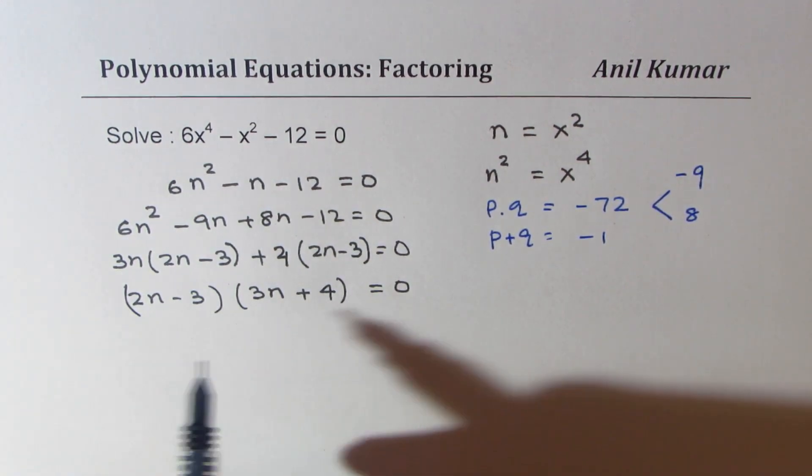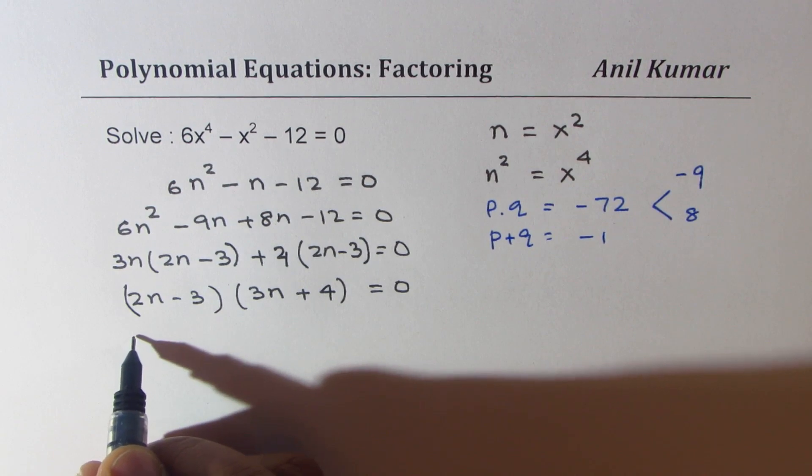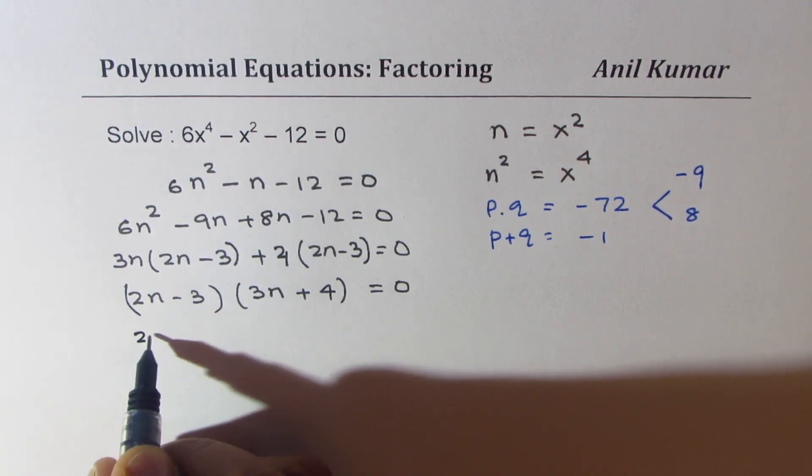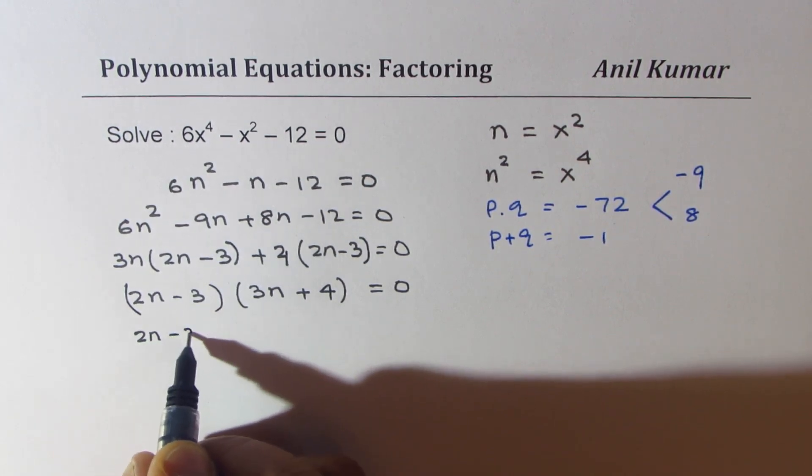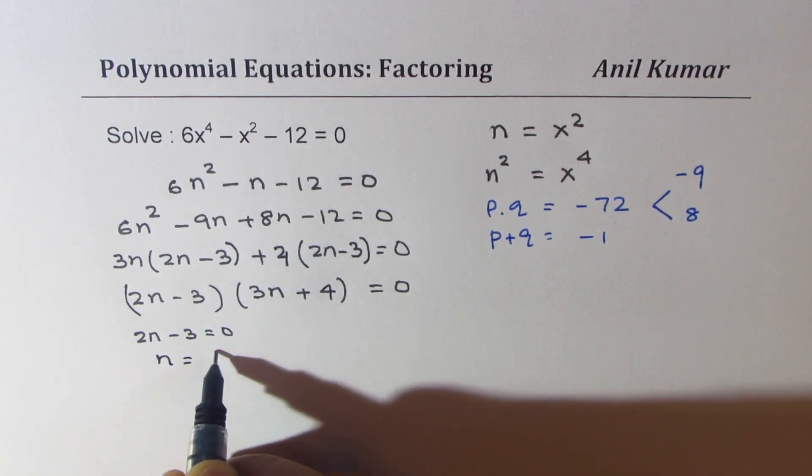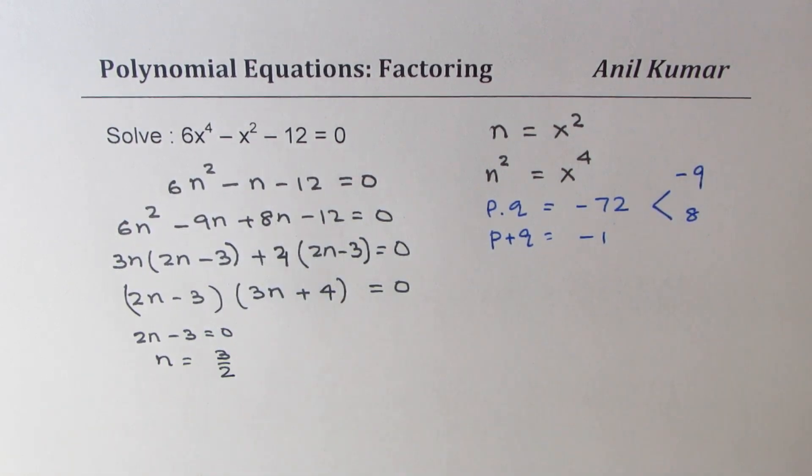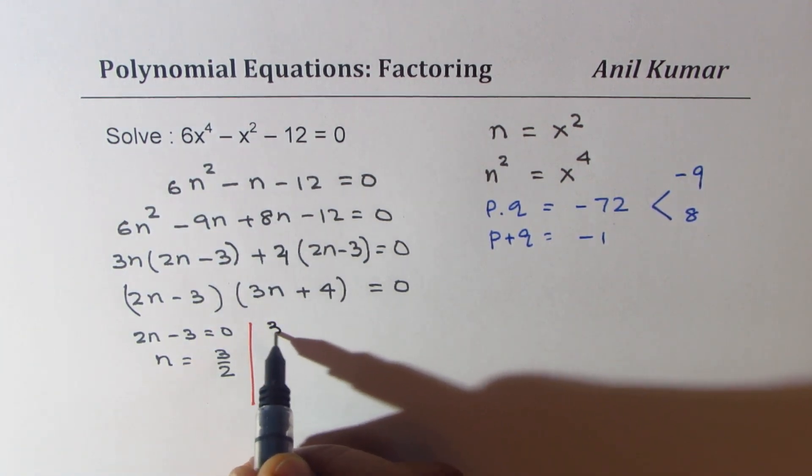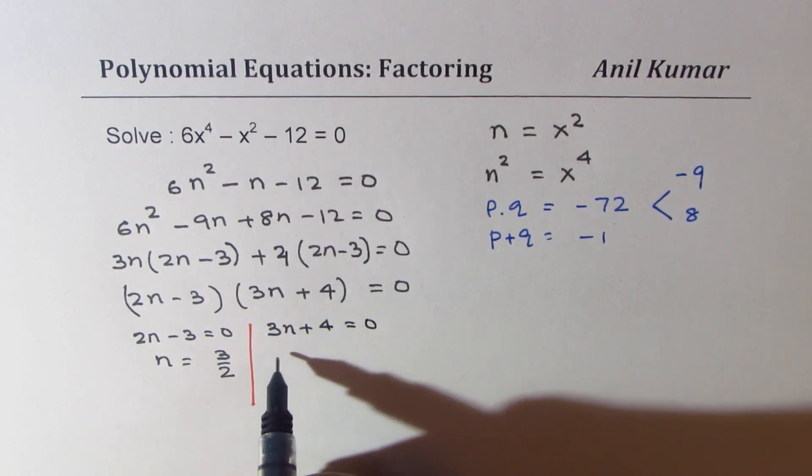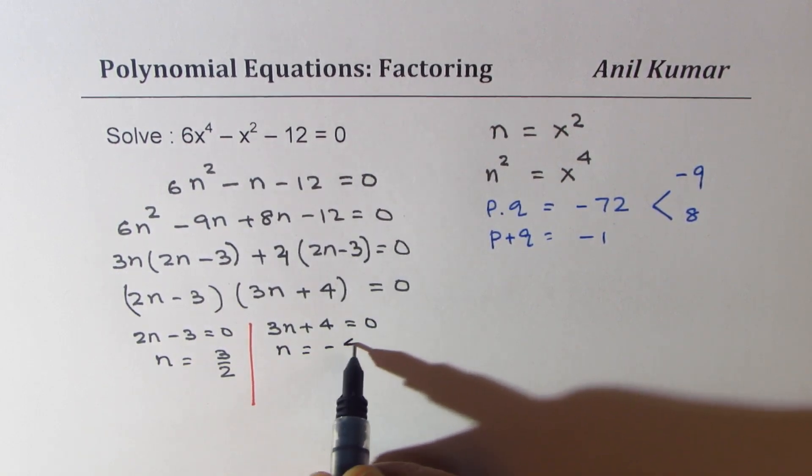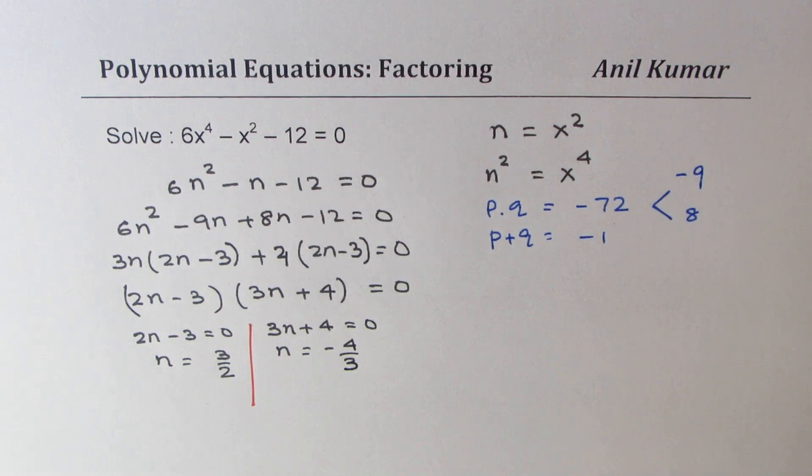From here, we get solution as we can equate 2n minus 3 equal to 0. That gives us n equals to 3 over 2. The other solution is 3n plus 4 equals to 0. That gives us n equals to minus 4 over 3.